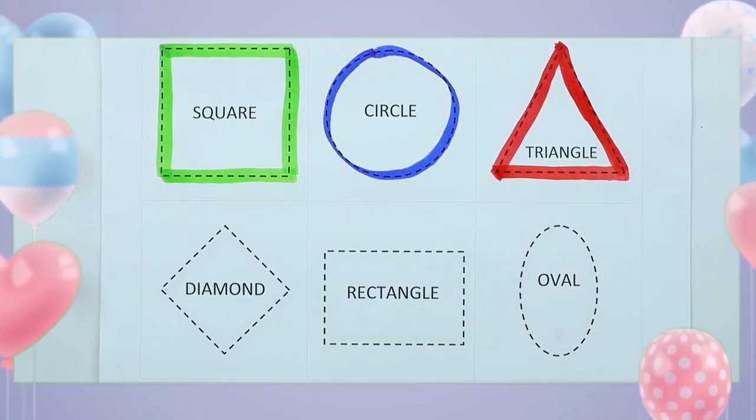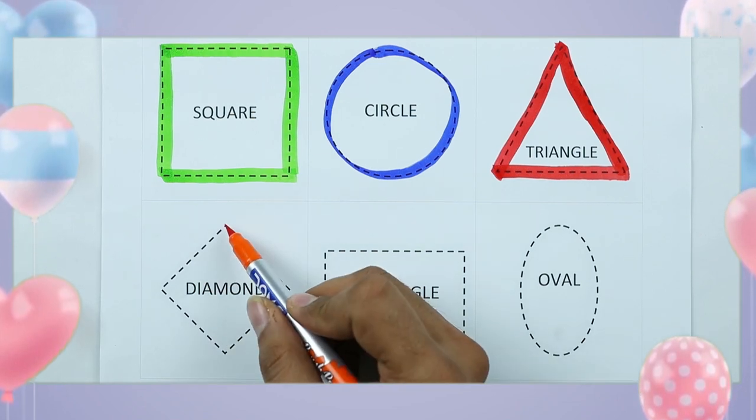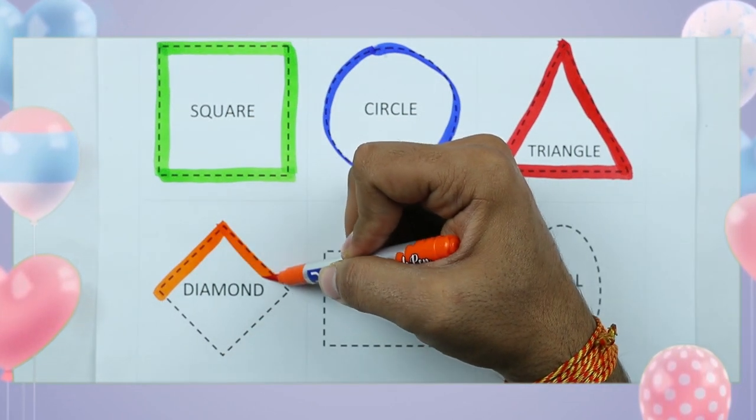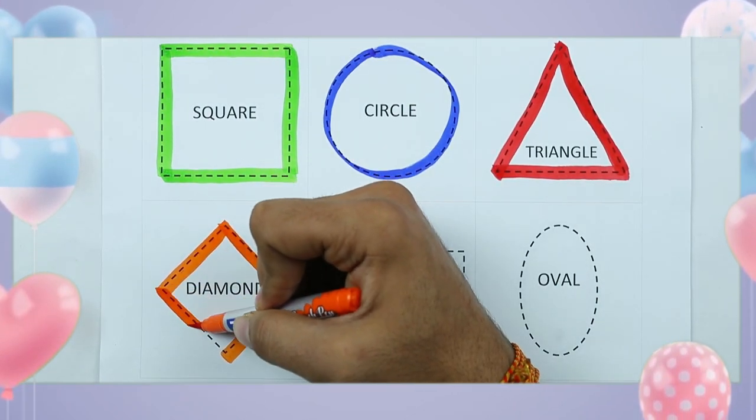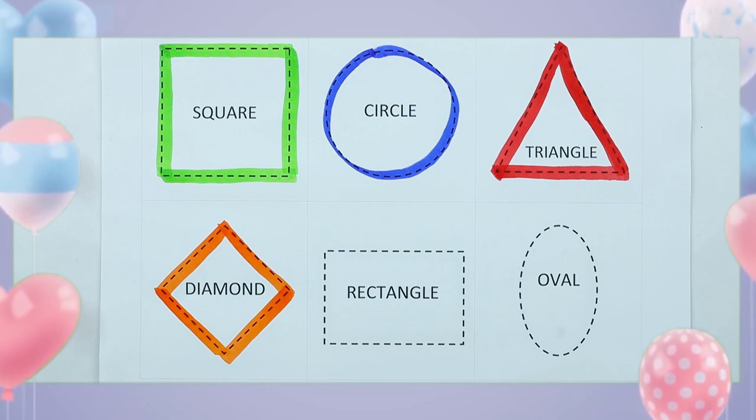It's a triangle with red color. One sliding line, two sliding line, three sliding line, four sliding line. It's a diamond, orange color diamond.